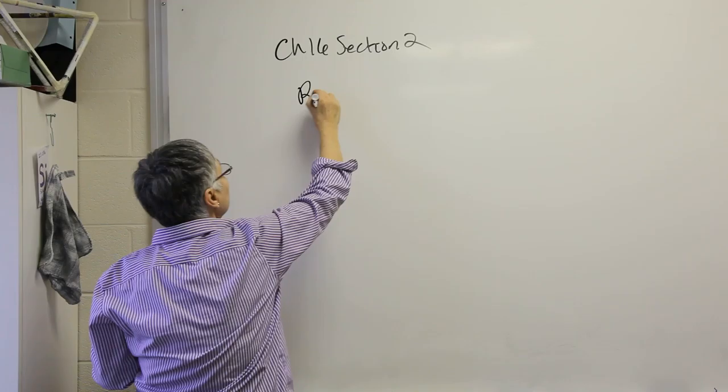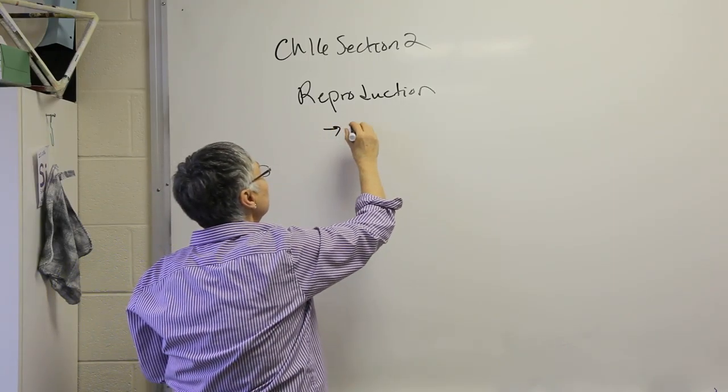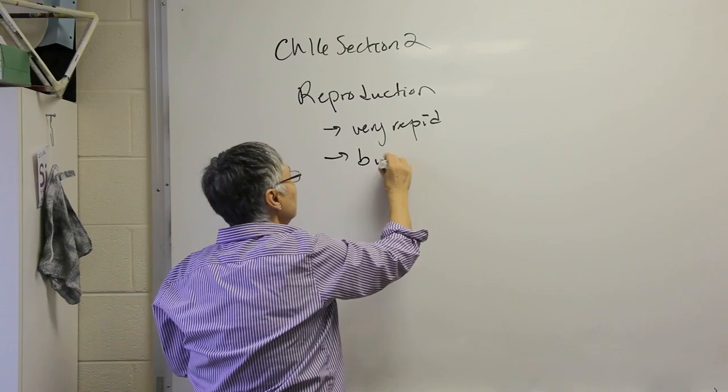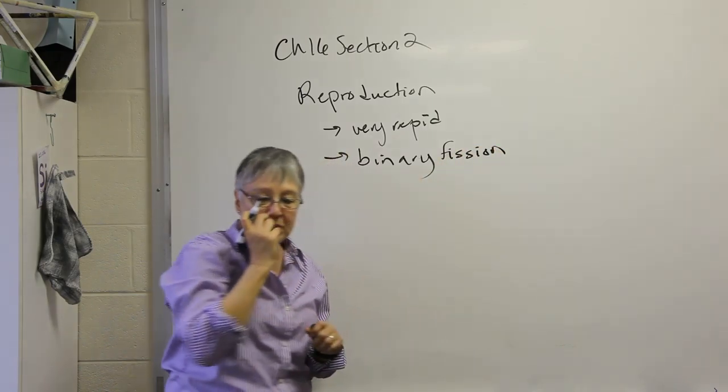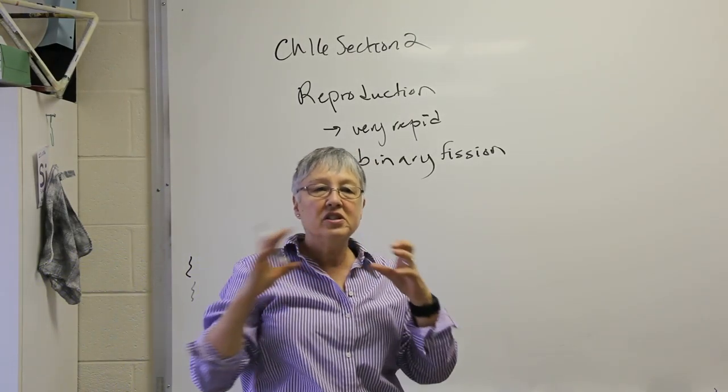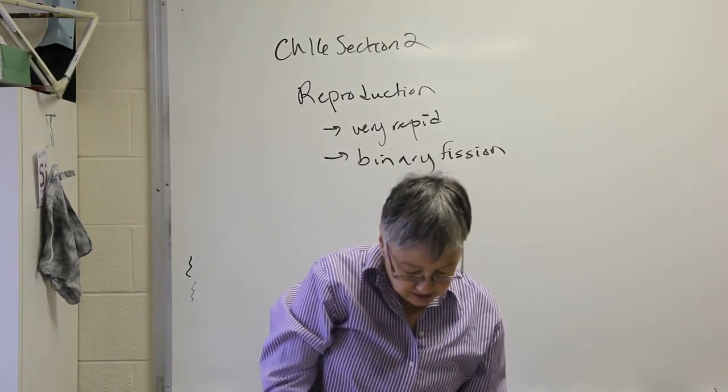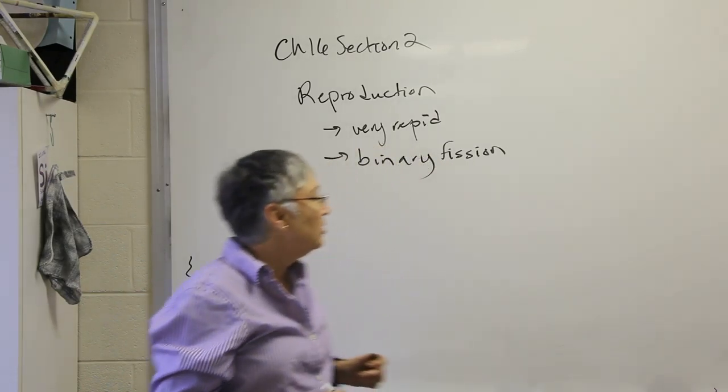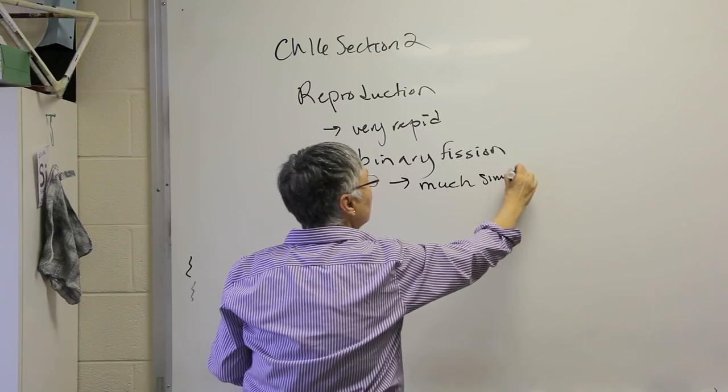If we look at reproduction in bacteria, it is very rapid. The mechanism that's used is much simpler than mitosis. It's called binary fission and simply involves replicating the bacterial chromosome, enlarging the cell, and then creating a new cell wall to separate the two cells. Your textbook has a diagram, figure 1611 on page 363, which gives a pretty good illustration of it. So it's much simpler than mitosis.